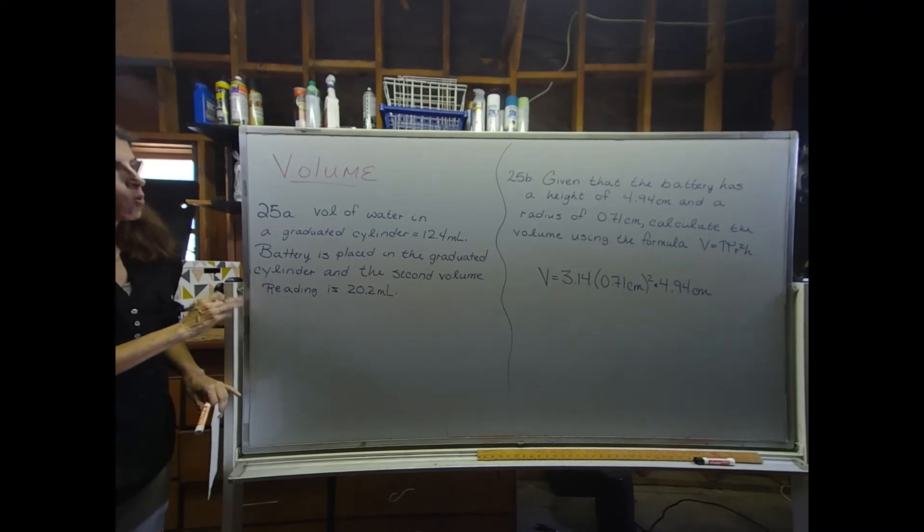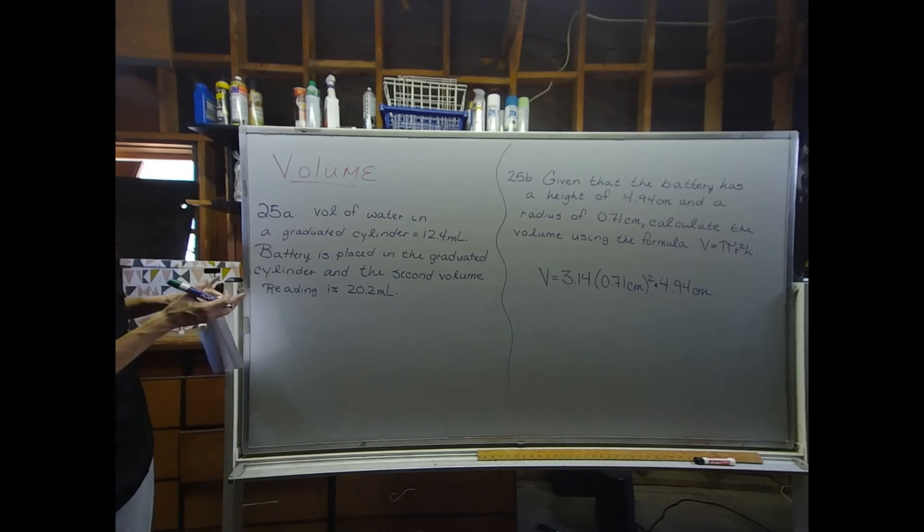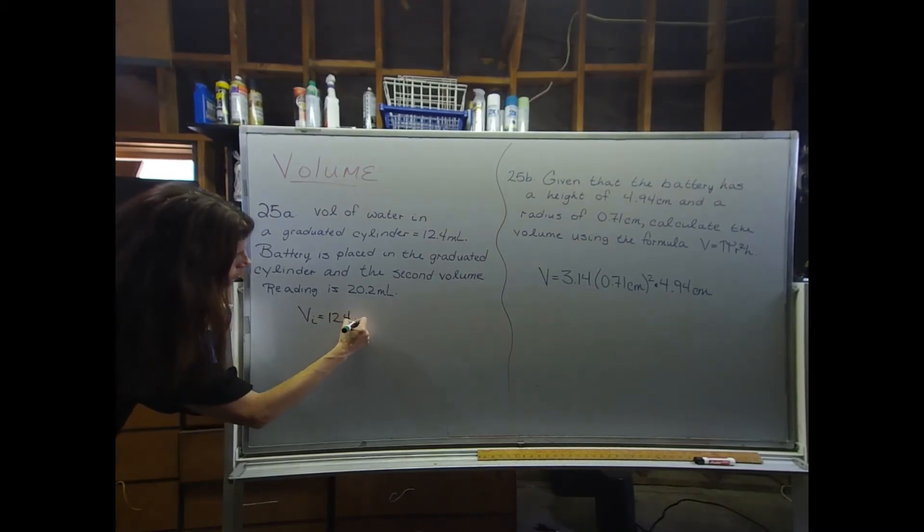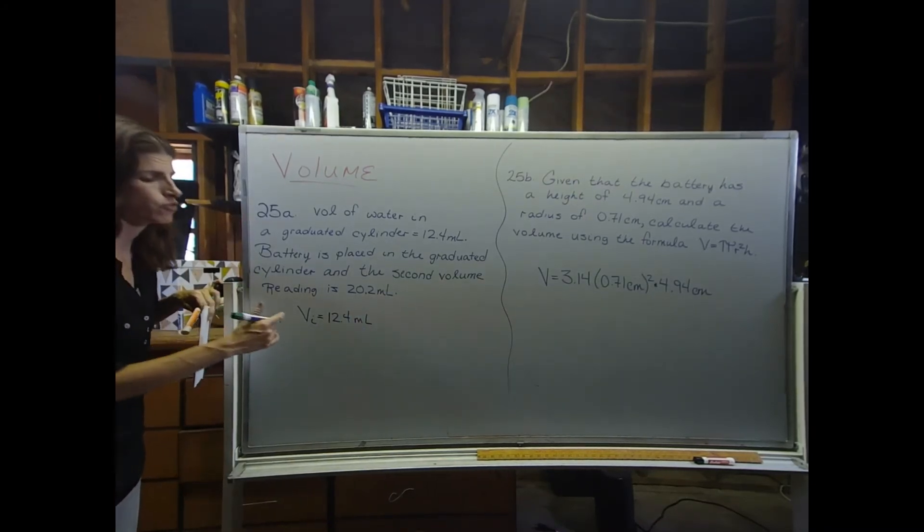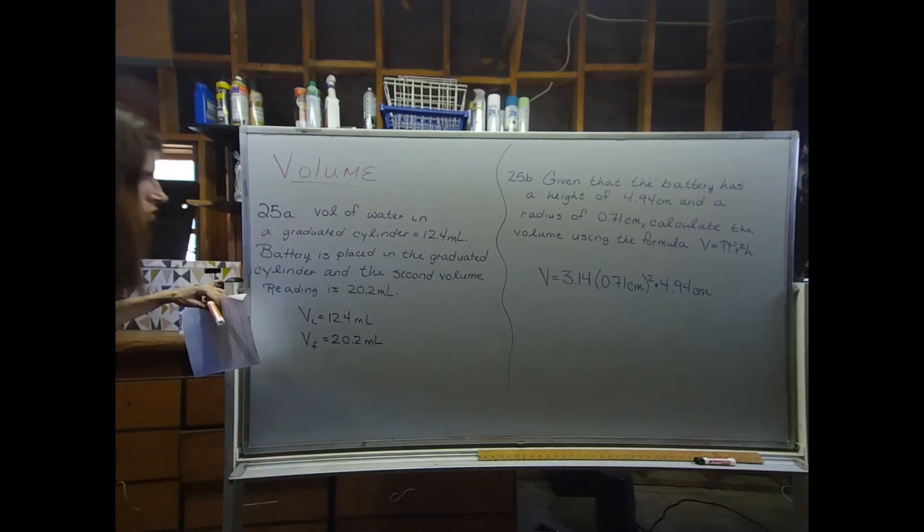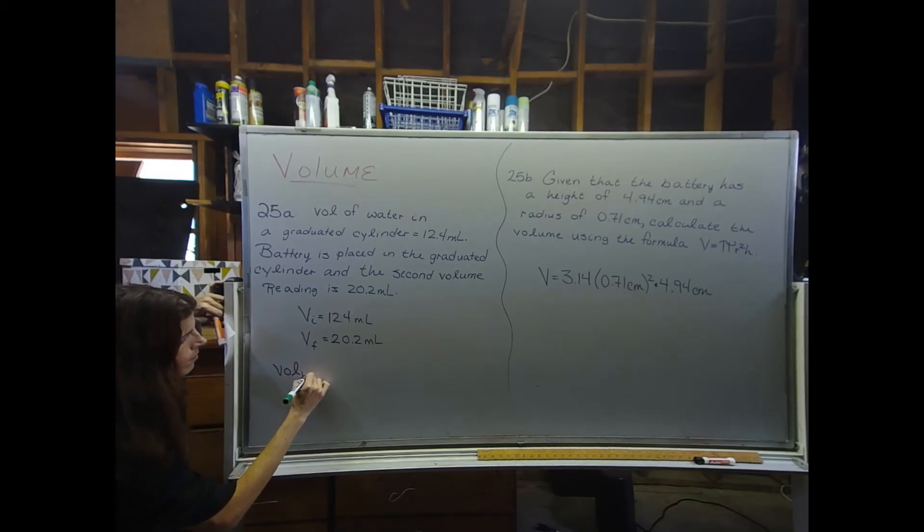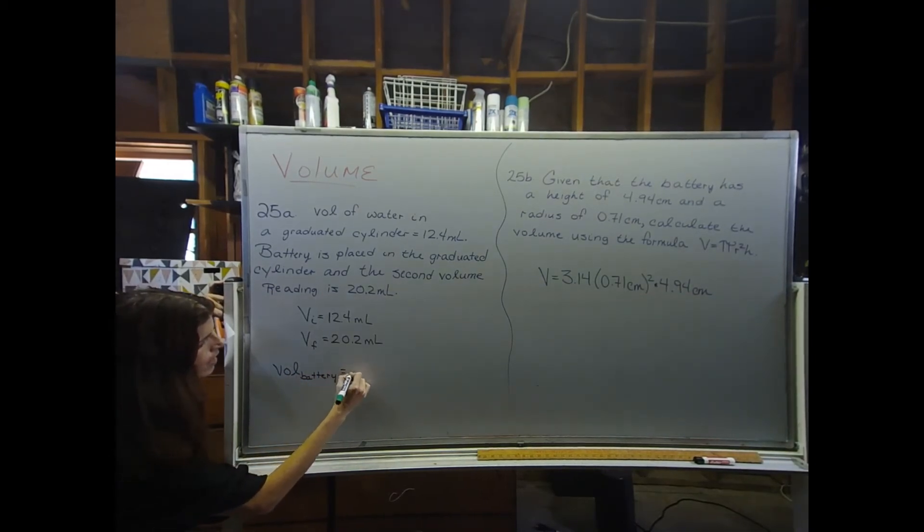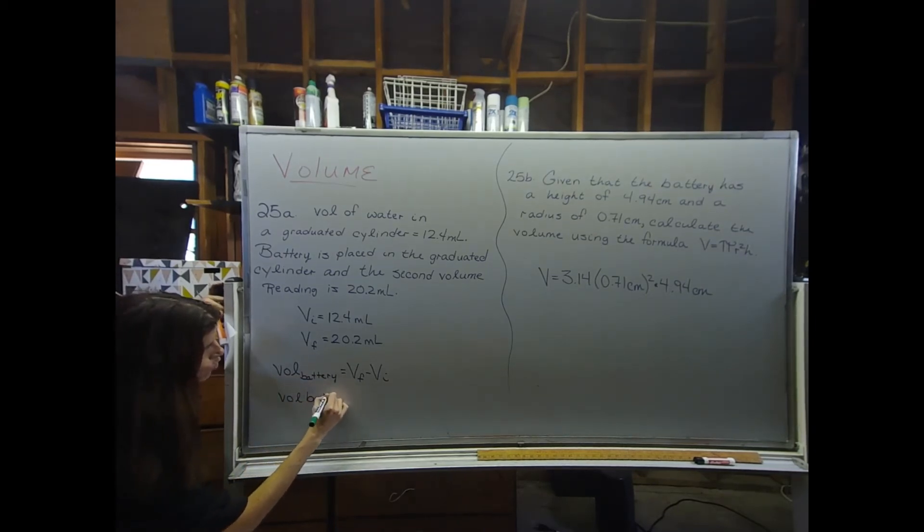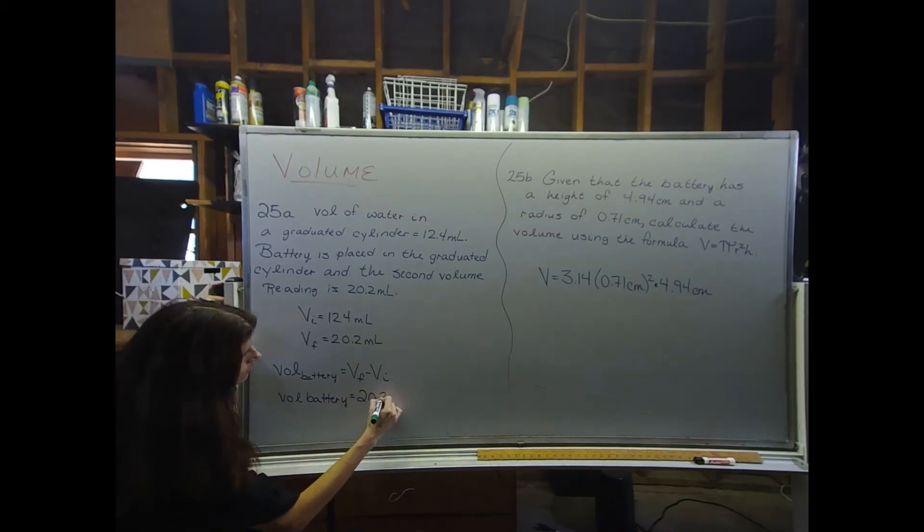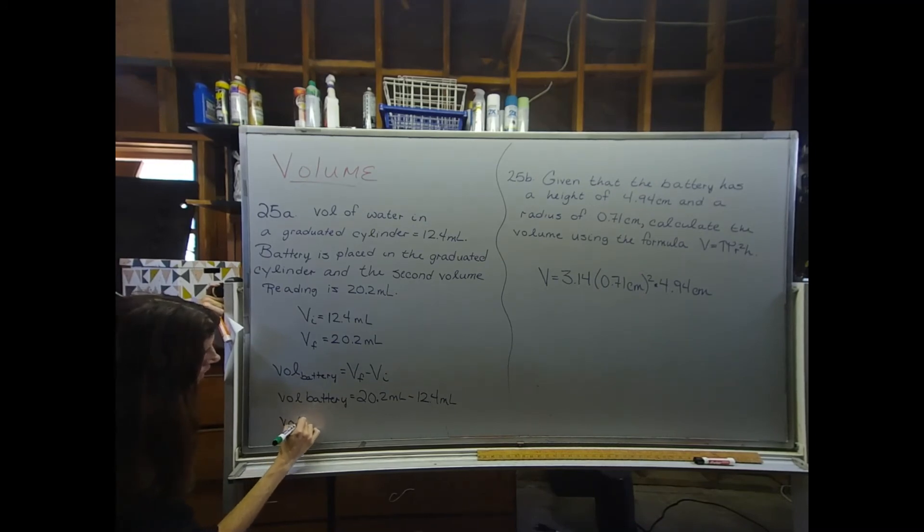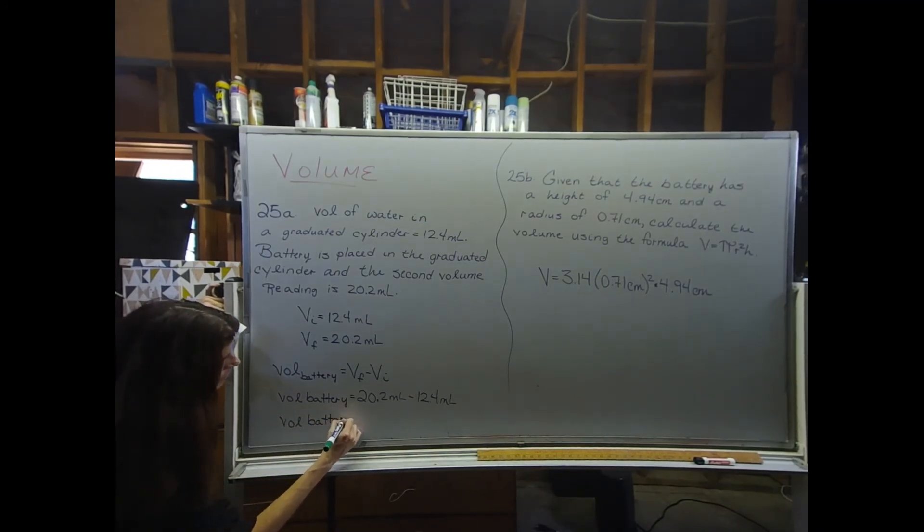So in 25A, we're going to need to use volume by displacement to figure out the volume of this battery. So our initial volume is equal to 12.4 mls. And our final volume after the battery is added to the graduated cylinder is equal to 20.2 mls. So the volume of the battery can be defined as the final volume minus the initial volume. So I'm going to do 20.2 mls minus 12.4 mls. That means that the battery has a volume of 7.8 mls.